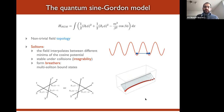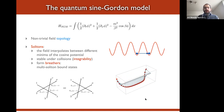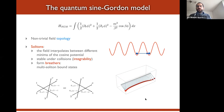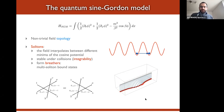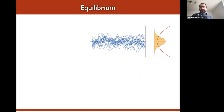Solitons can also form bound states called breathers. In the quantum case, a breather corresponds to an excitation where two solitons are delocalized across all space. In the classical case, we can imagine two solitons bound together through the interaction — they remain close to each other and don't move apart.